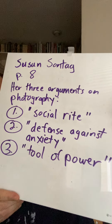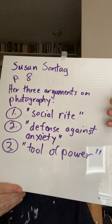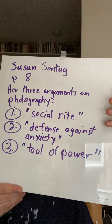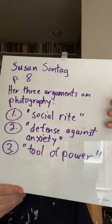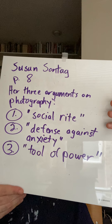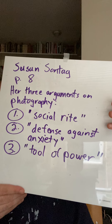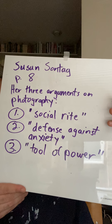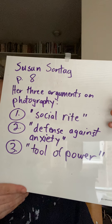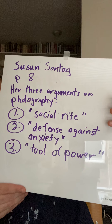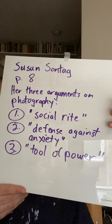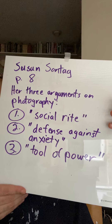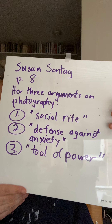Let me put my board up here for a second. These are the three things she mentions on page 8. Photography as a social right would mean family photographs — that's the first example she uses. She says there are certain photographs used for developing family connections and social bonds.